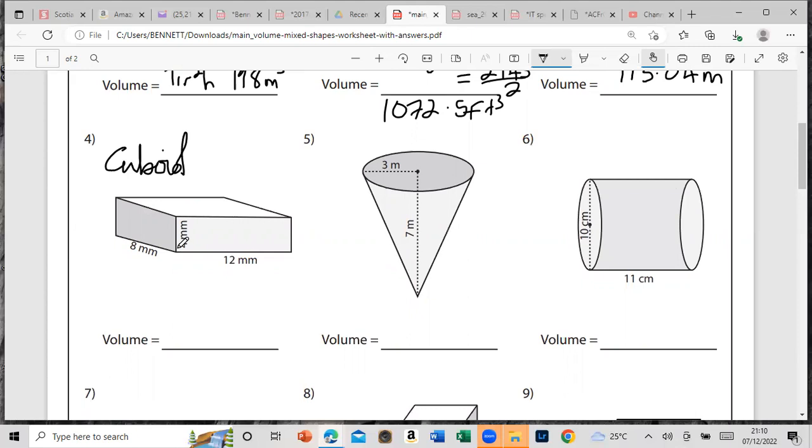It's the area of the base, so that will be 8 times 12, and then the height will be 4. So multiply by 4. 32 times 12, I'll use my calculator to get 384 cubic millimeters.